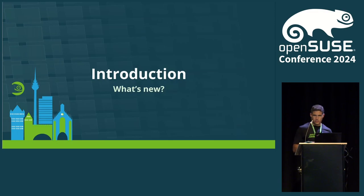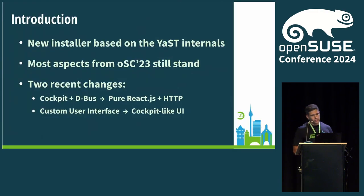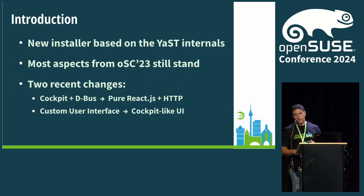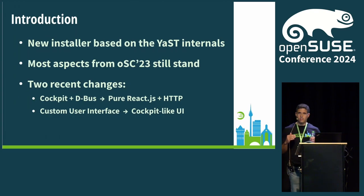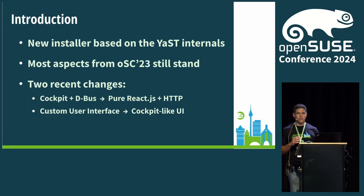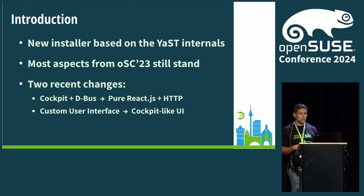Let's jump directly to this very small theoretical recap. For those who don't know, Agama is basically an initiative from the JAST team to use the JAST internals and then build on top of it a modern user interface and a set of APIs, so those JAST internals can be used from other infrastructure.